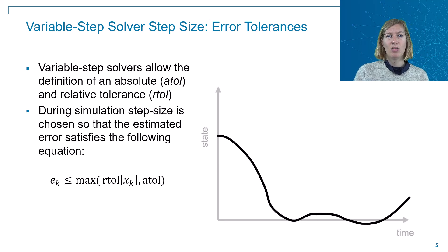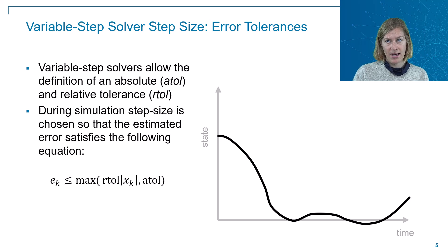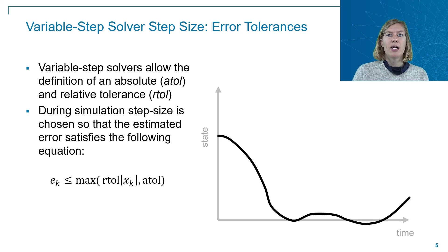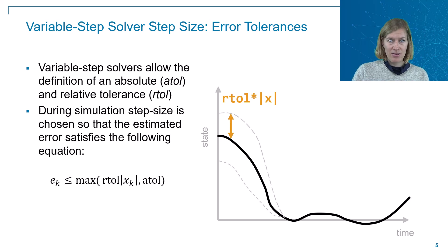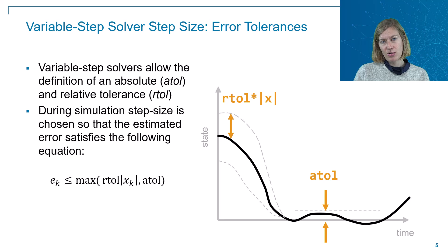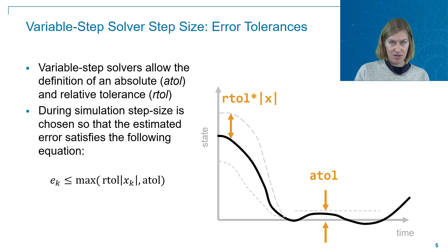Looking at an example of how a state value — for example, a Simscape variable — varies over time: when that variable is of higher value, this is where typically the relative tolerance dictates the step size, as opposed to when it has a lower value, where the absolute tolerance is typically more important.